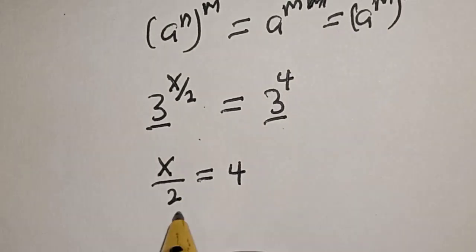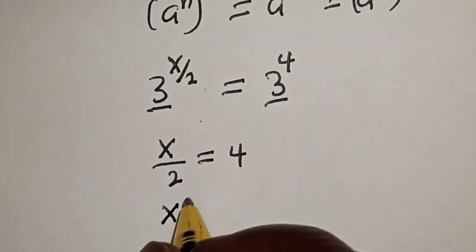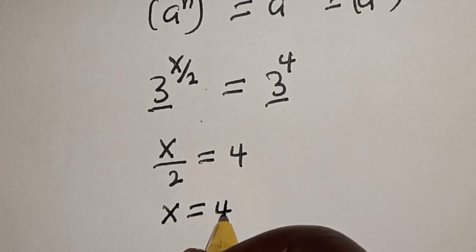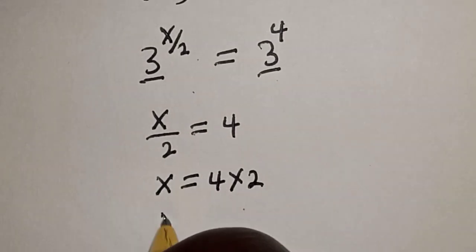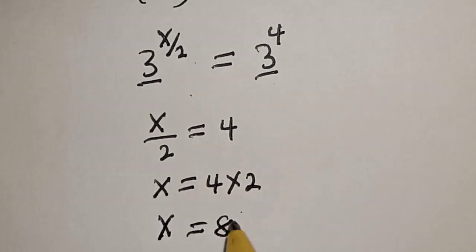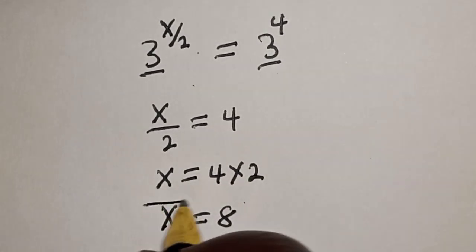Now let's cross multiply. So x is equal to 4 multiplied by 2. Now x is equal to 8. That is our final answer.